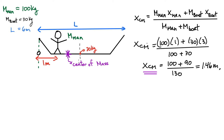That gives a center of mass position of 1.46 meters, which I've marked on the diagram. This makes sense because with a mass on one side and another mass further away, the center of mass lies between them — closer to the heavier object. Since the man is more massive, it's only 46 centimeters away from him, like a weighted average.